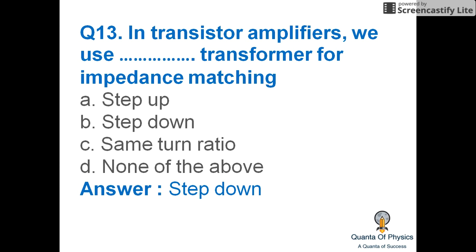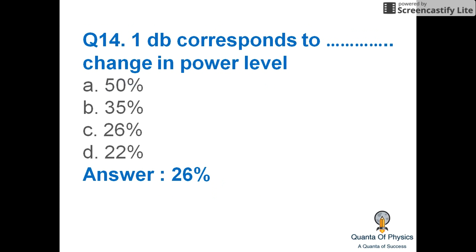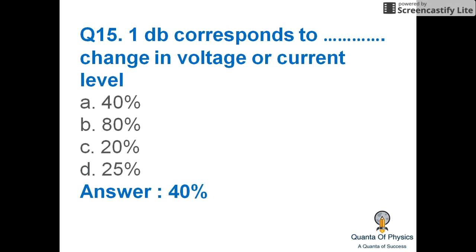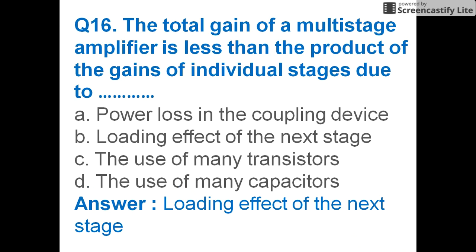One decibel corresponds to a 26% change in power level, and one decibel corresponds to a 40% change in voltage or current level. The total gain of a multi-stage amplifier is less than the product of the gains of individual stages due to the loading effect of the next stage.